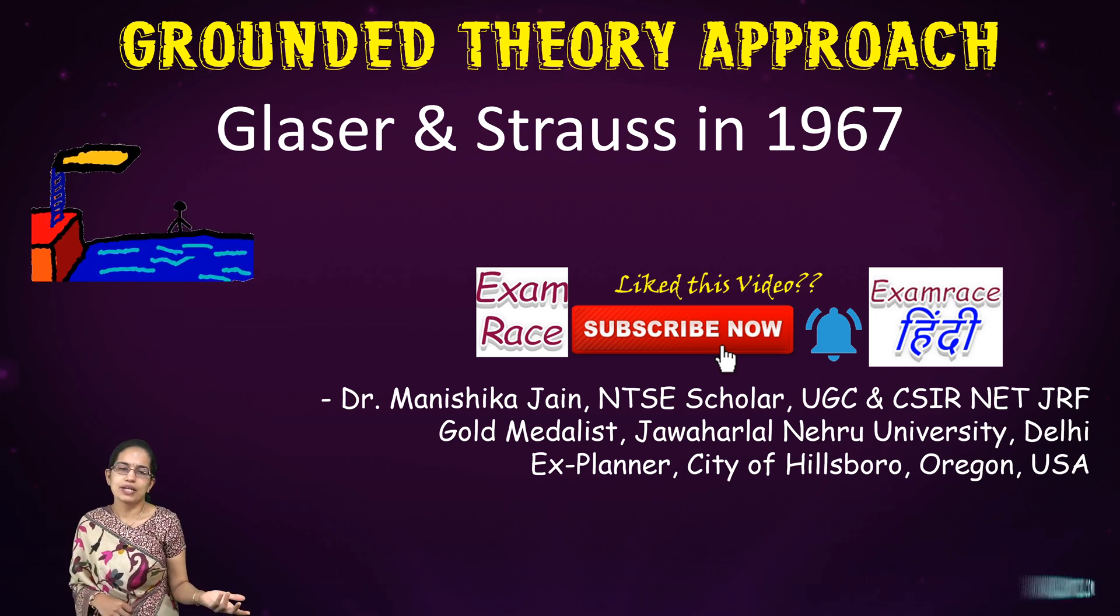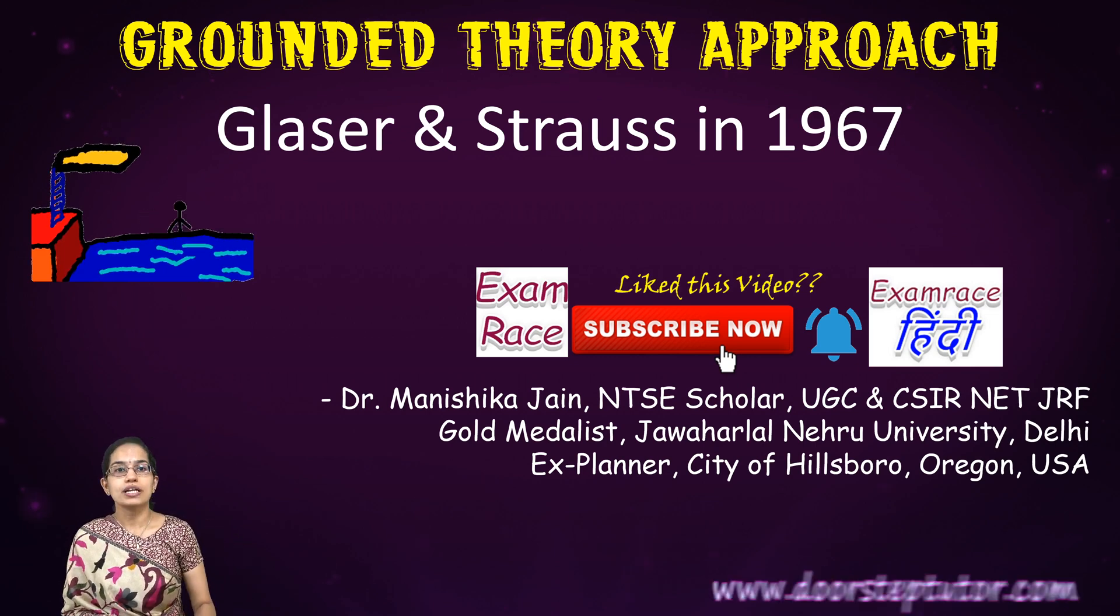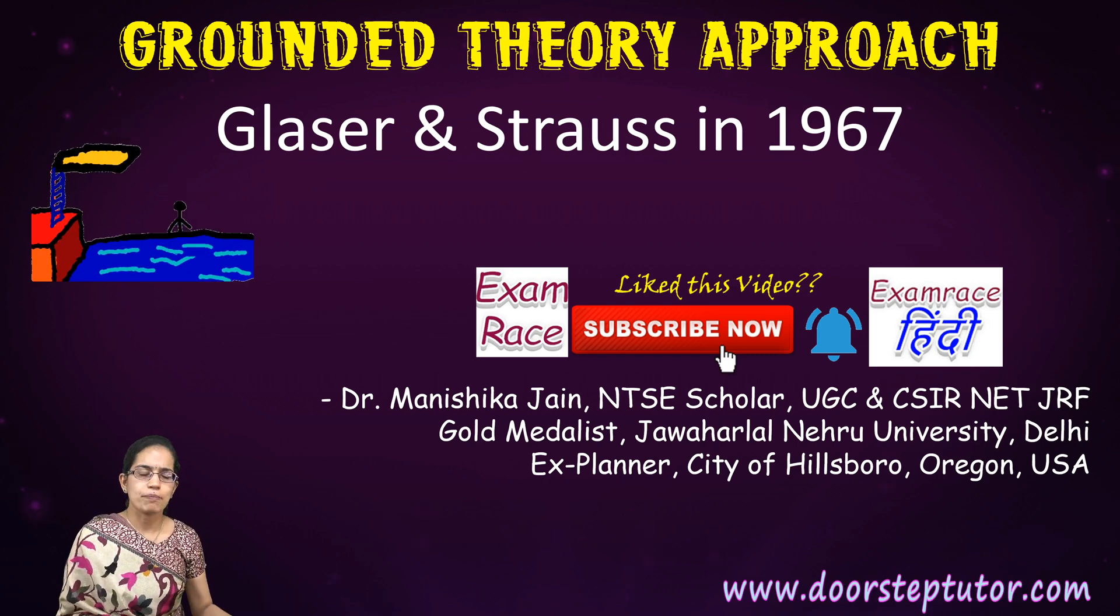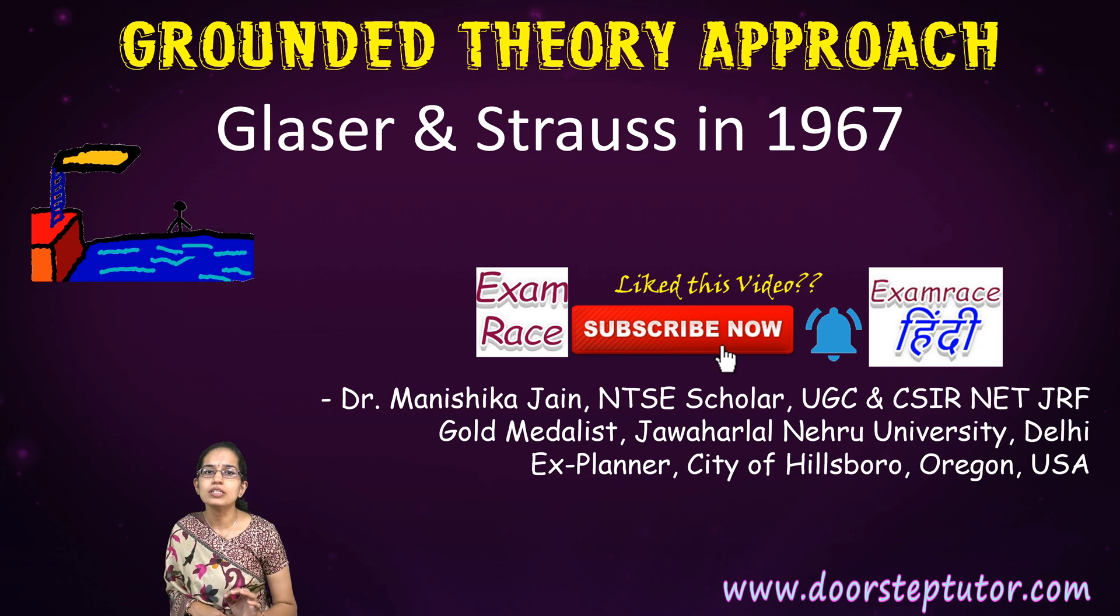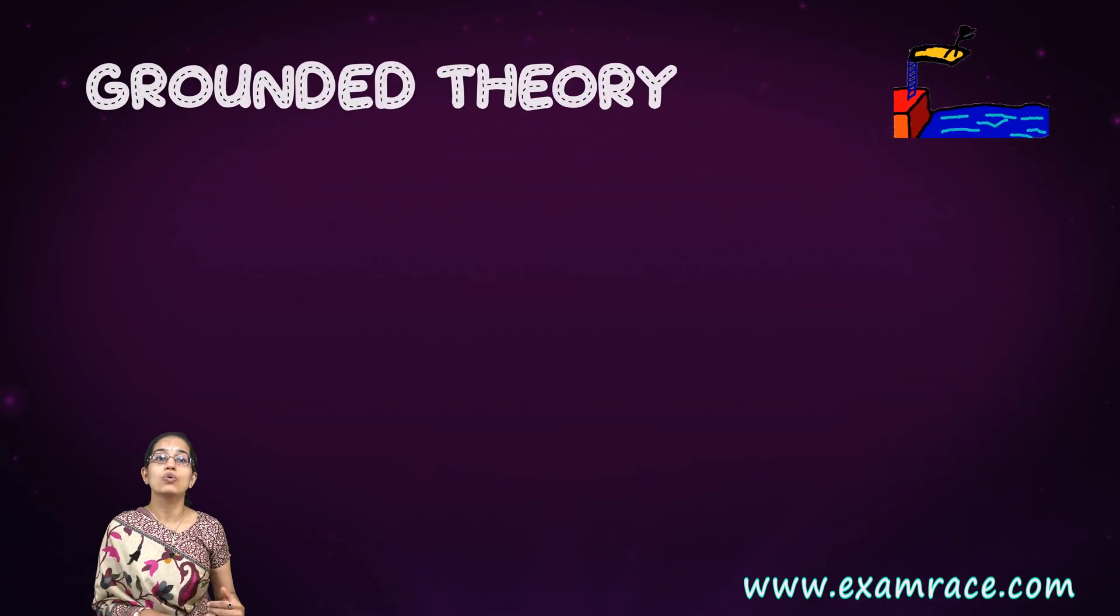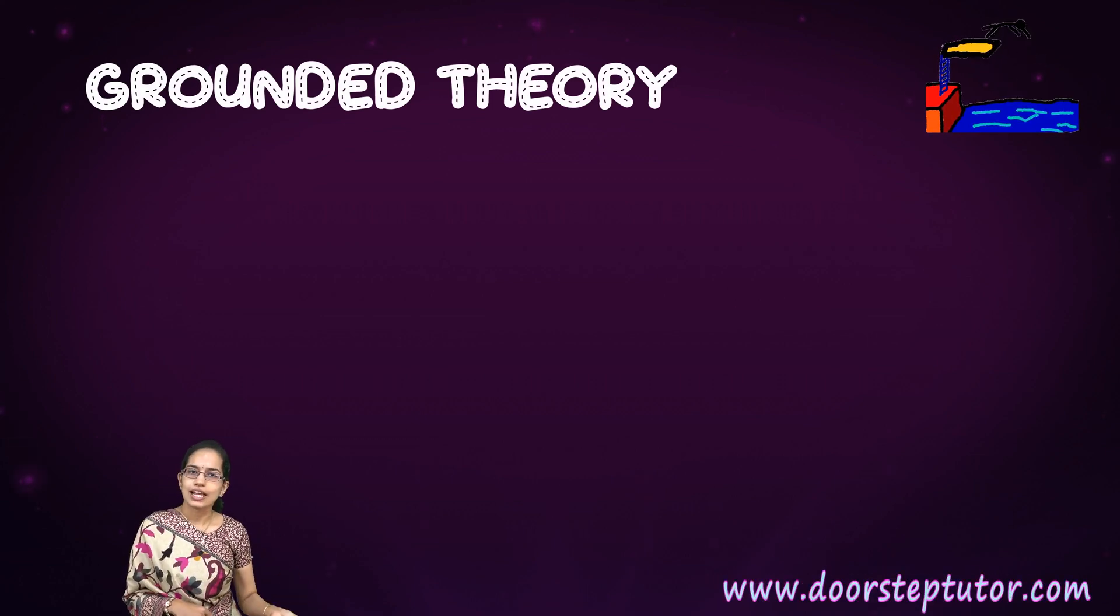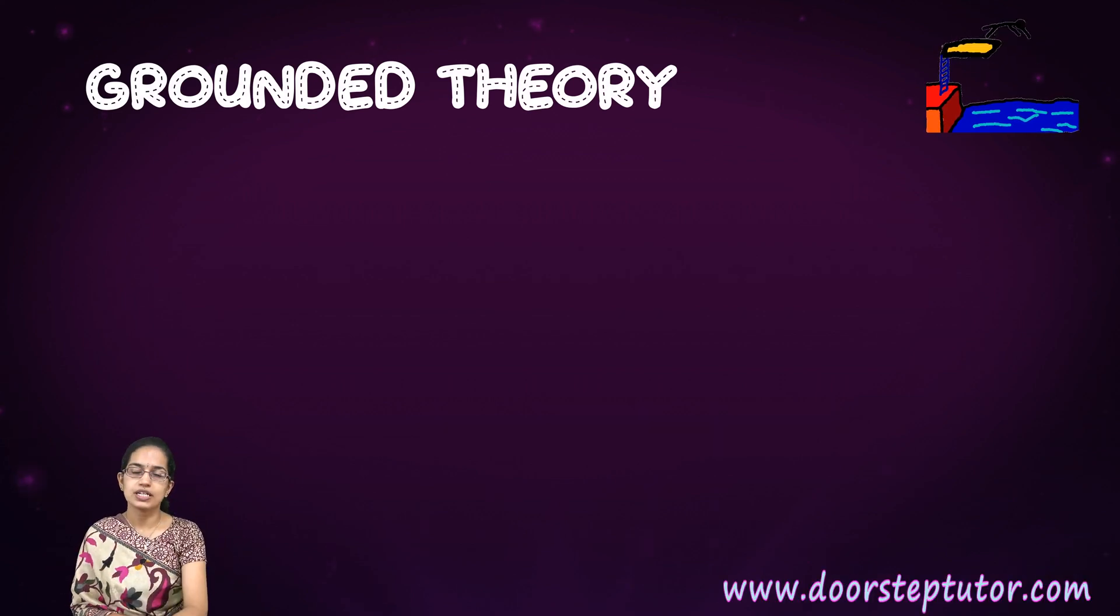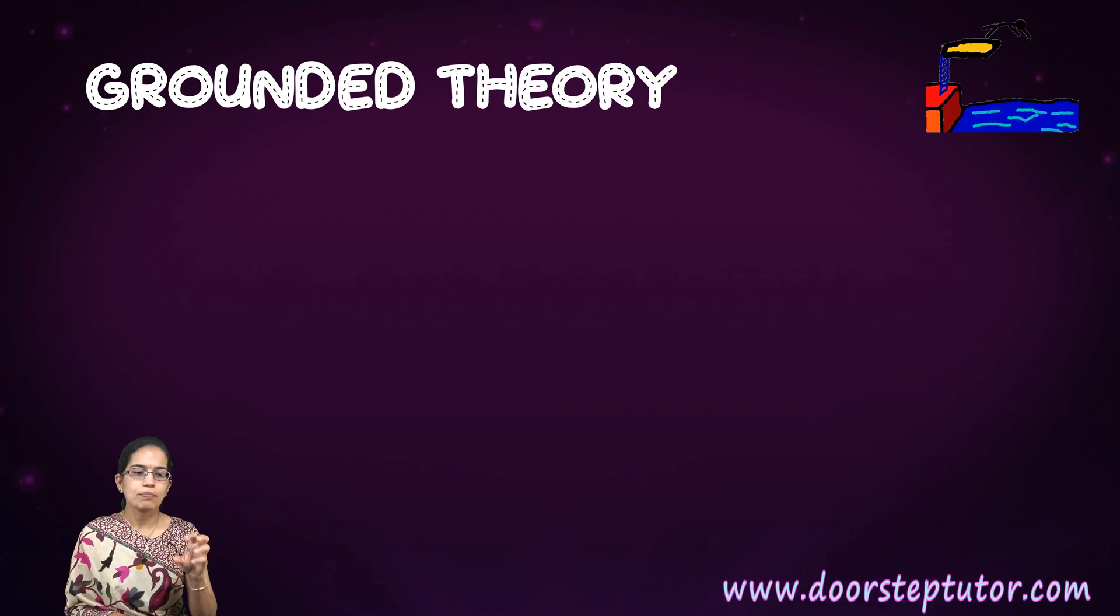Let's take a very simple example. I need to find out a model how to become a university topper. This is my research topic. What would I do? My first way of collecting data would be interviewing people who have topped in universities and colleges, taking students from different streams - art, science, humanities. Under this approach, what I do in the starting is theoretical sampling.